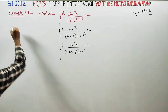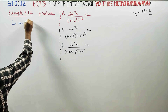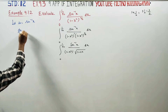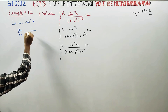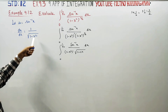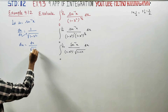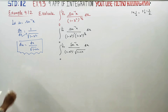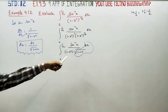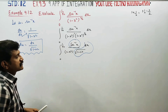We use the substitution method. Let u equal sin⁻¹x. Differentiating, du/dx equals 1 divided by root of (1 minus x²). So dx divided by root of (1 minus x²) equals du.